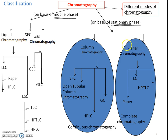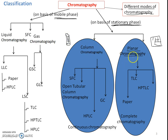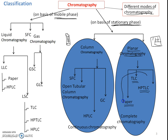In the case of planar chromatography, a planar surface is used on which a thin layer of adsorbent acts as the stationary phase. In column chromatography, the adsorbent material is embedded into the column. The examples of planar chromatography are: paper chromatography, thin layer chromatography (TLC), and high performance thin layer chromatography (HPTLC).